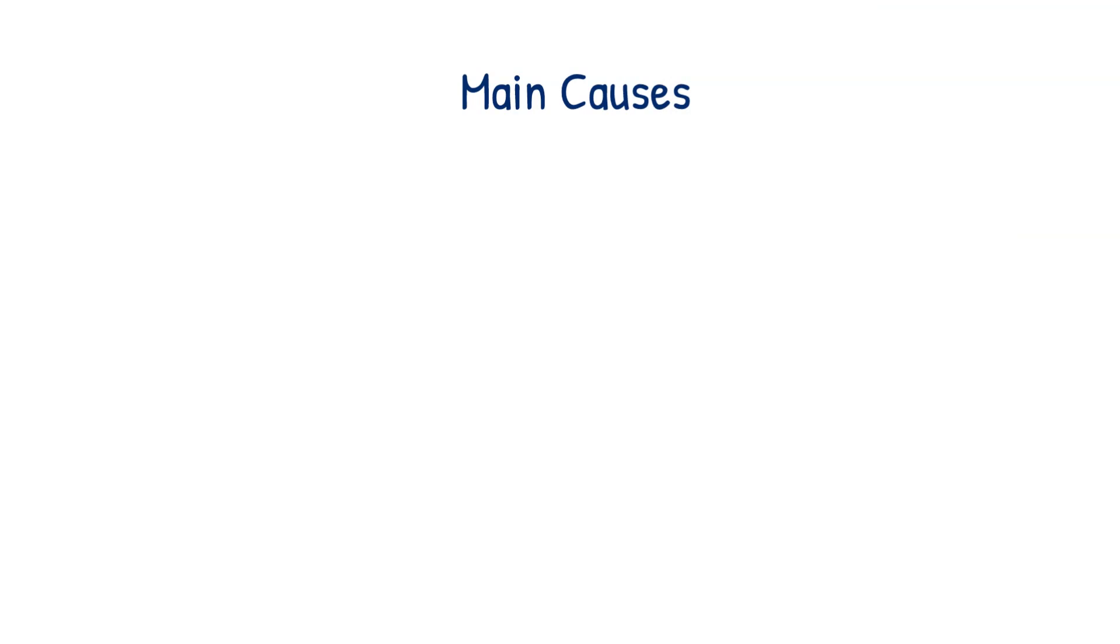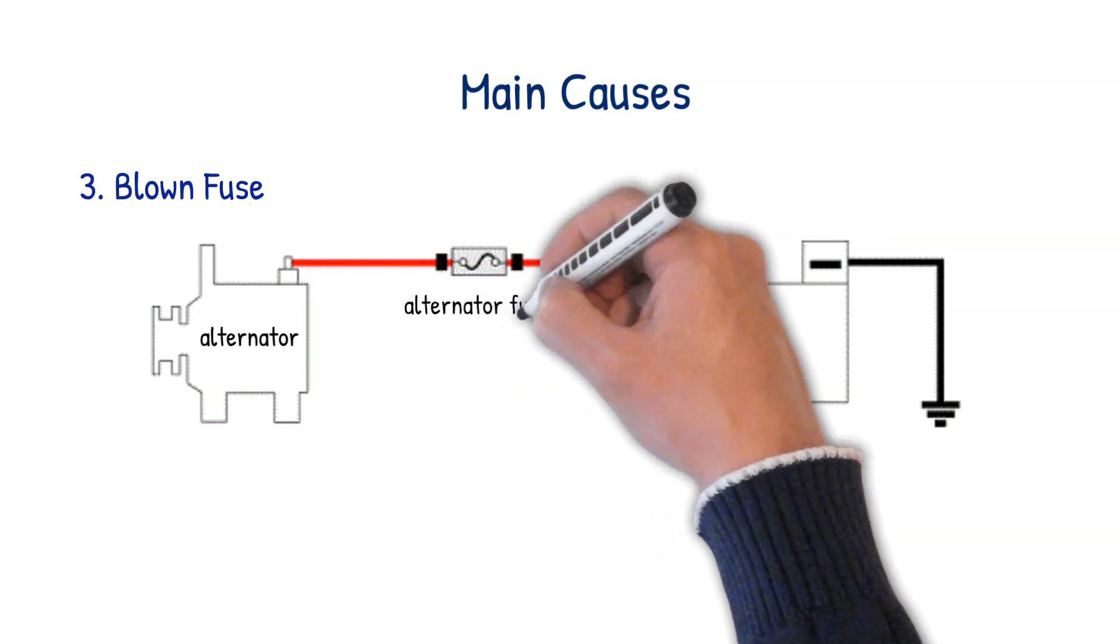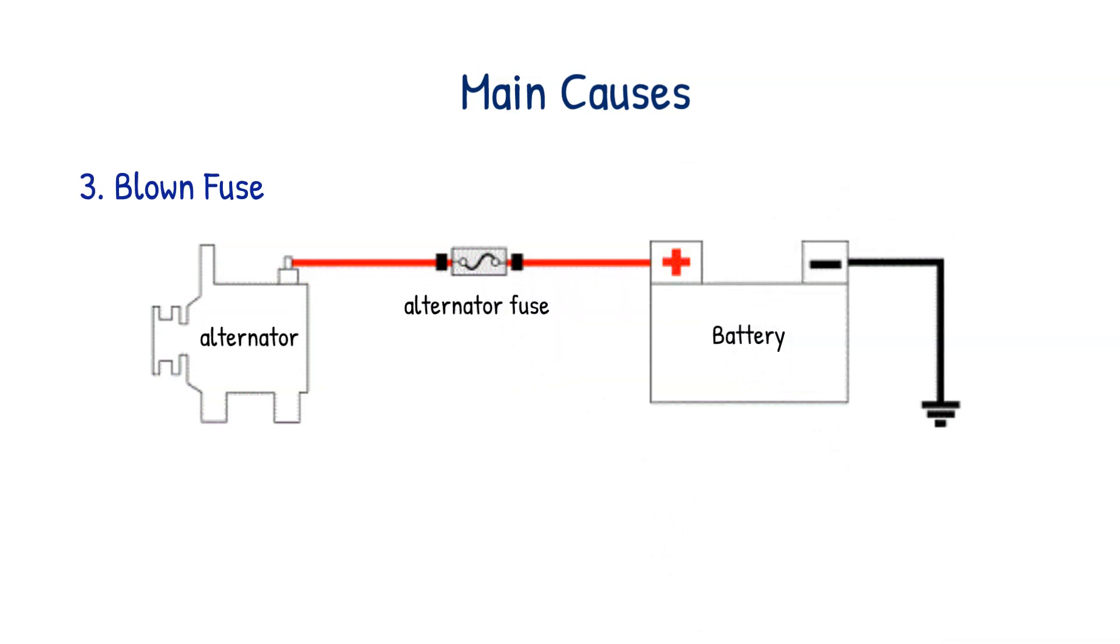There are certain models of car which have alternators dependent on a particular fuse to operate. However, these fuses can blow due to a power surge or simply from old age. Once that happens, the alternator will no longer charge the battery. Not all vehicles have these fuses, so check your owner's manual to see if your car has them. If so, this is well worth investigating if your car is not charging properly.